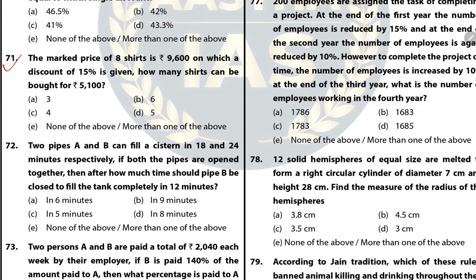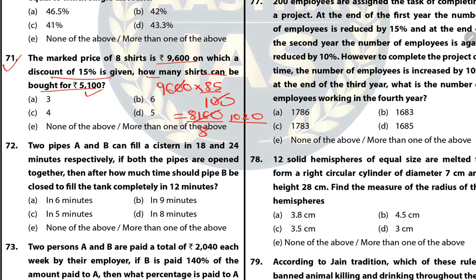Question 71: The marked price of 8 shirts is 9,600, on which a discount of 15% is given. How many shirts can be bought for 5,100? First, we find the selling price: 9600 × 85/100 = 8,160. The selling price of 1 shirt is 8,160 ÷ 8 = 1,020. Dividing 5,100 by 1,020 gives 5. So, 5 shirts can be bought.